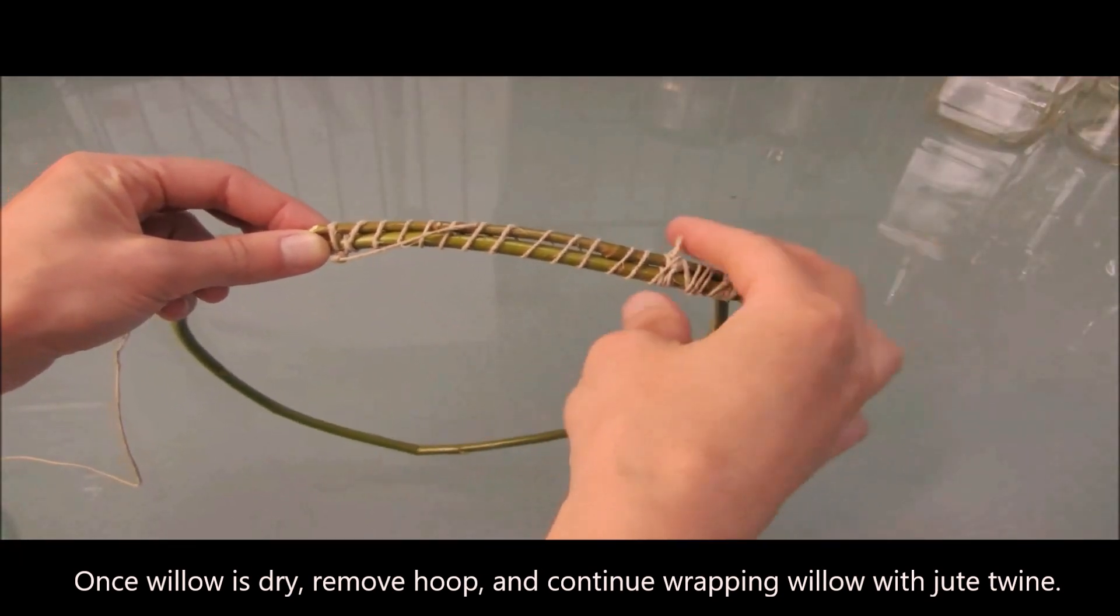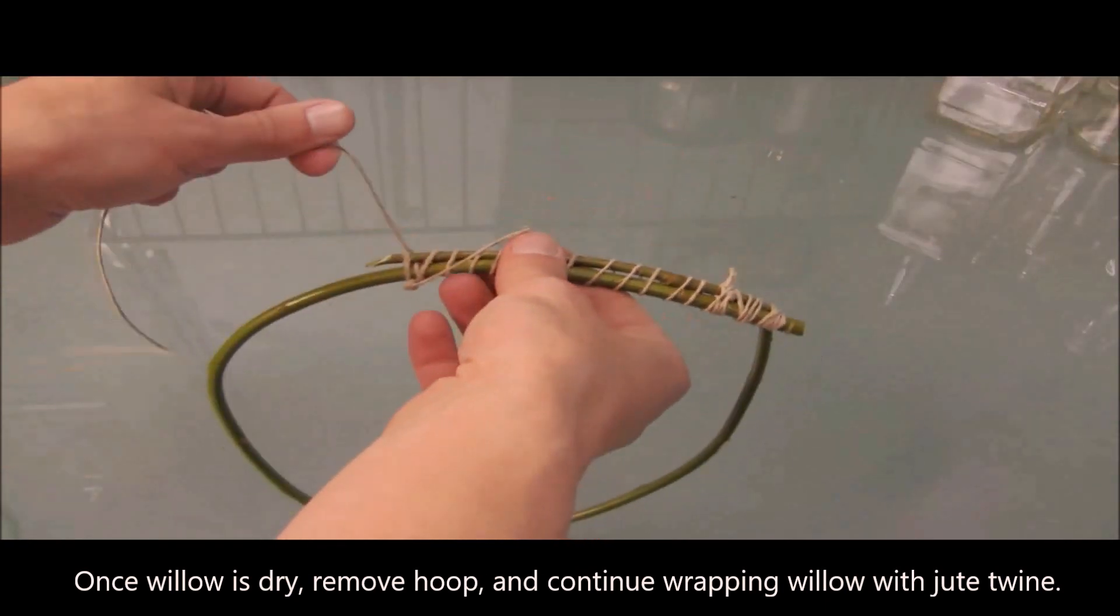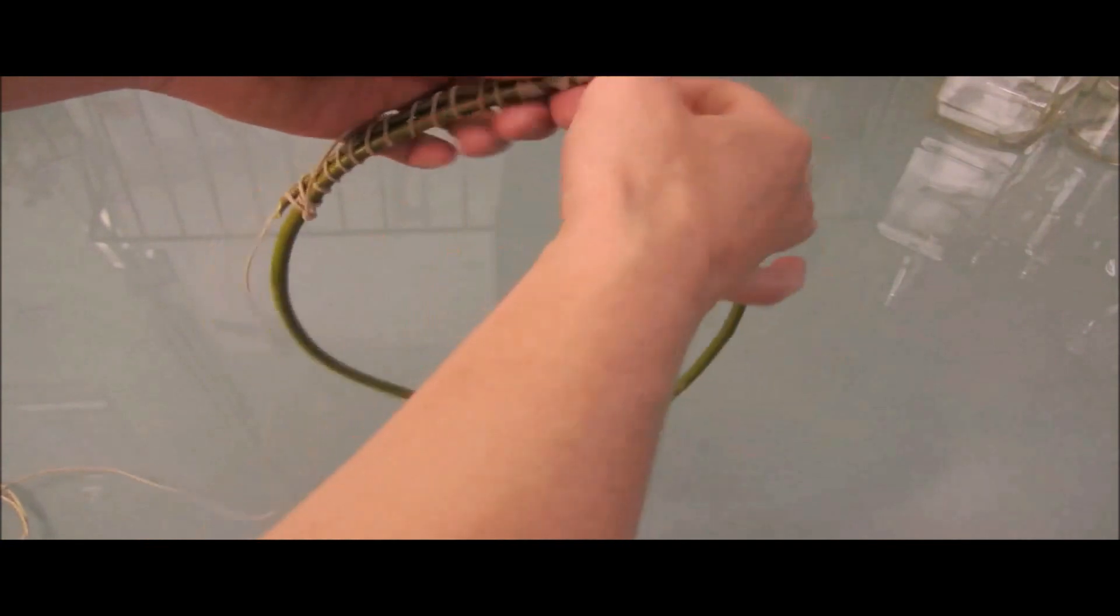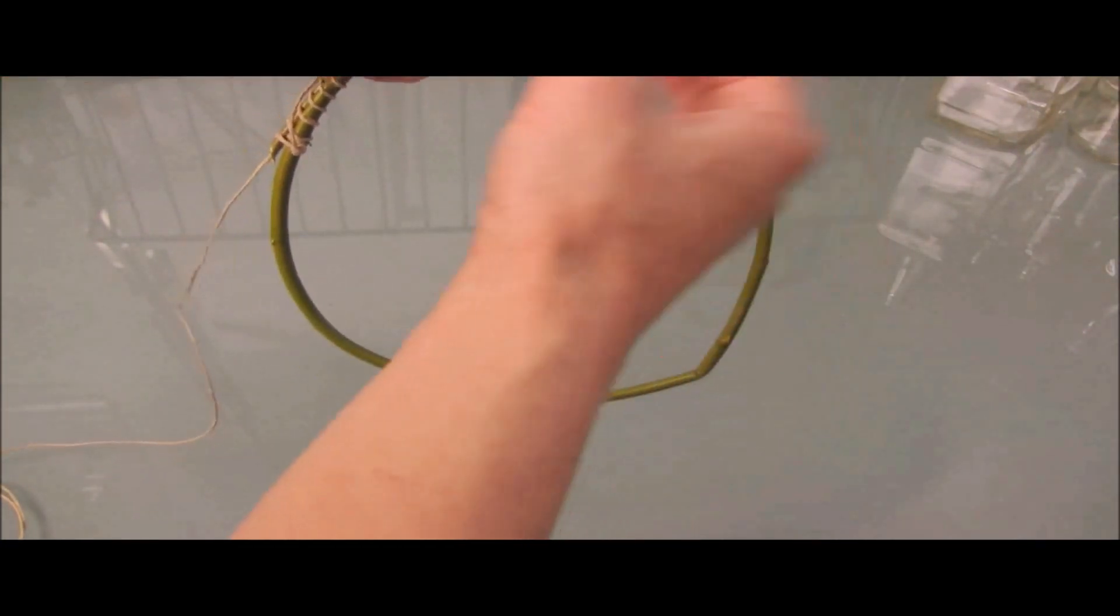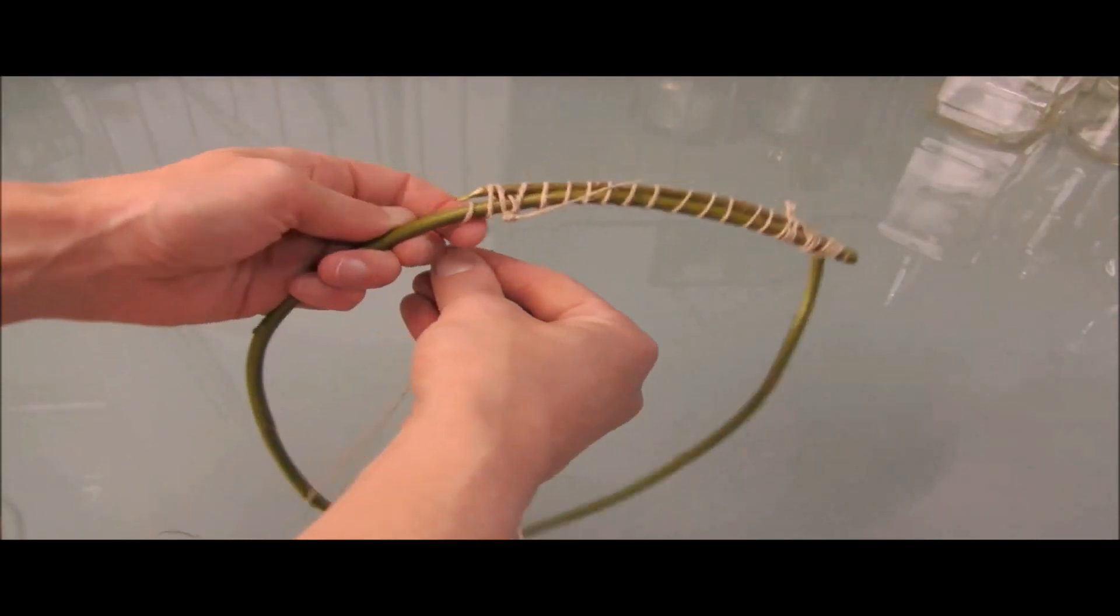Now that we have our hemp string wrapped around the willow to hold it securely in place, I'm going to take more hemp string, and I'm just going to loosely wrap it all around the hoop so that we have something to attach the tatting to. Go ahead and wrap it just like that.